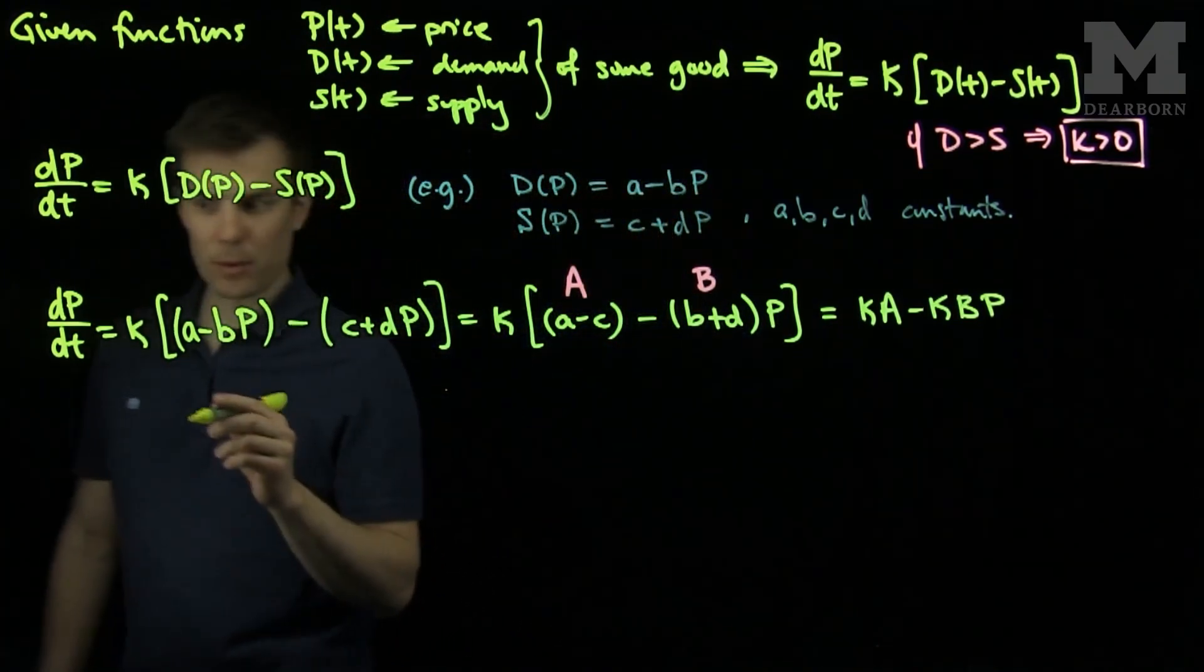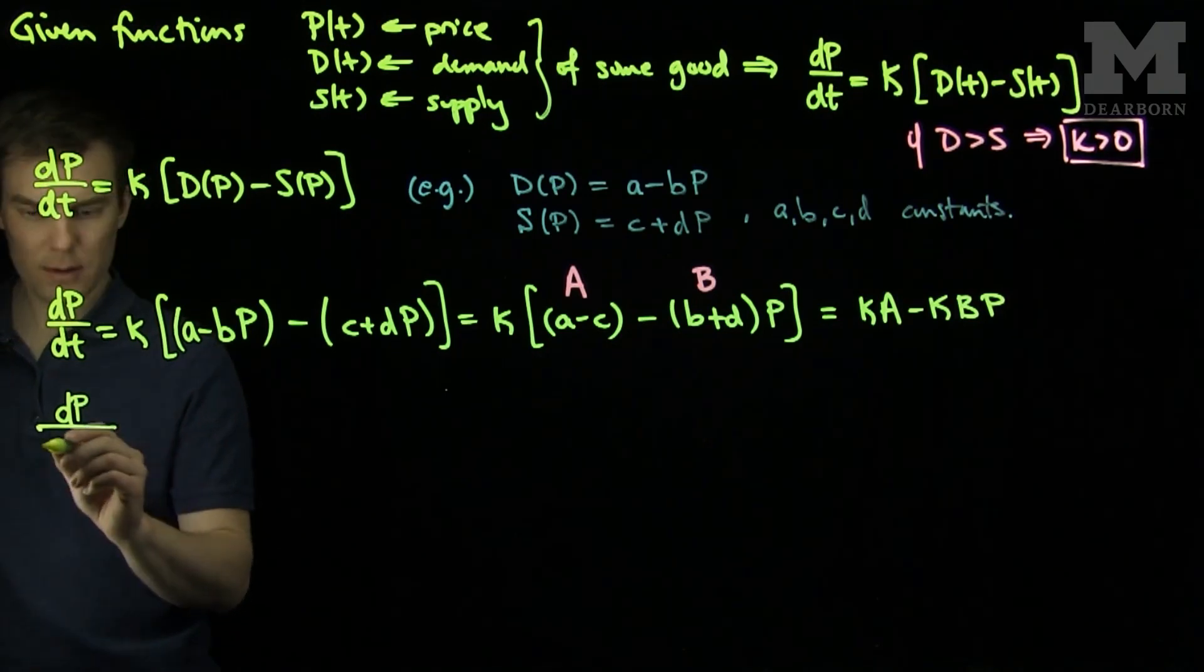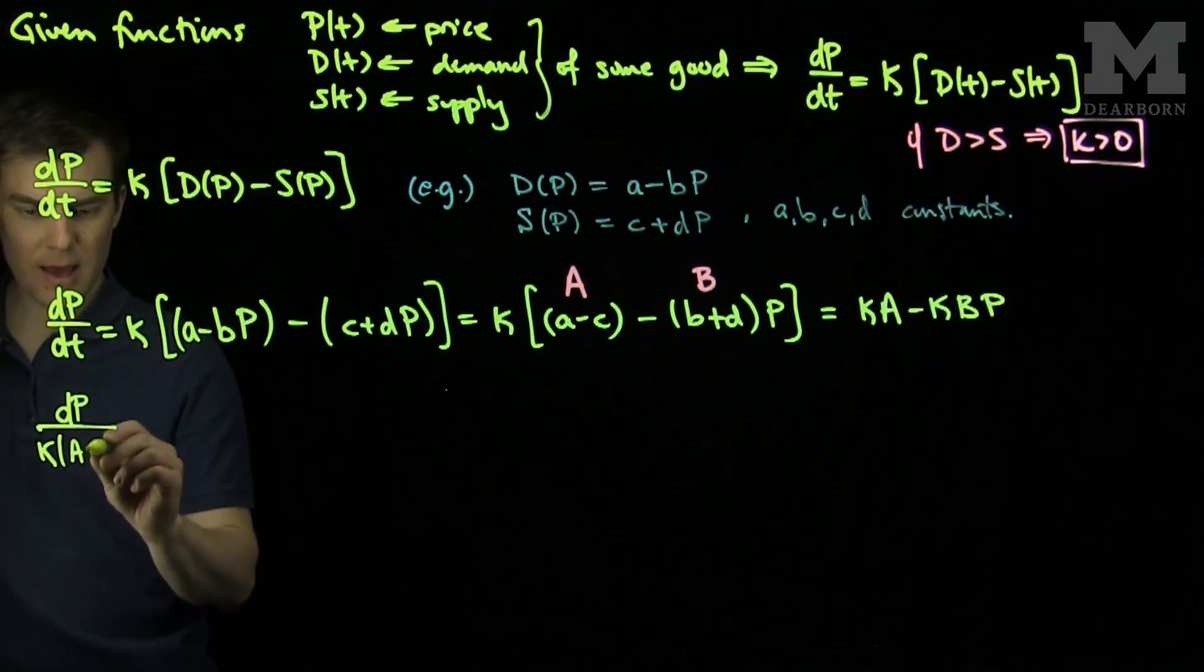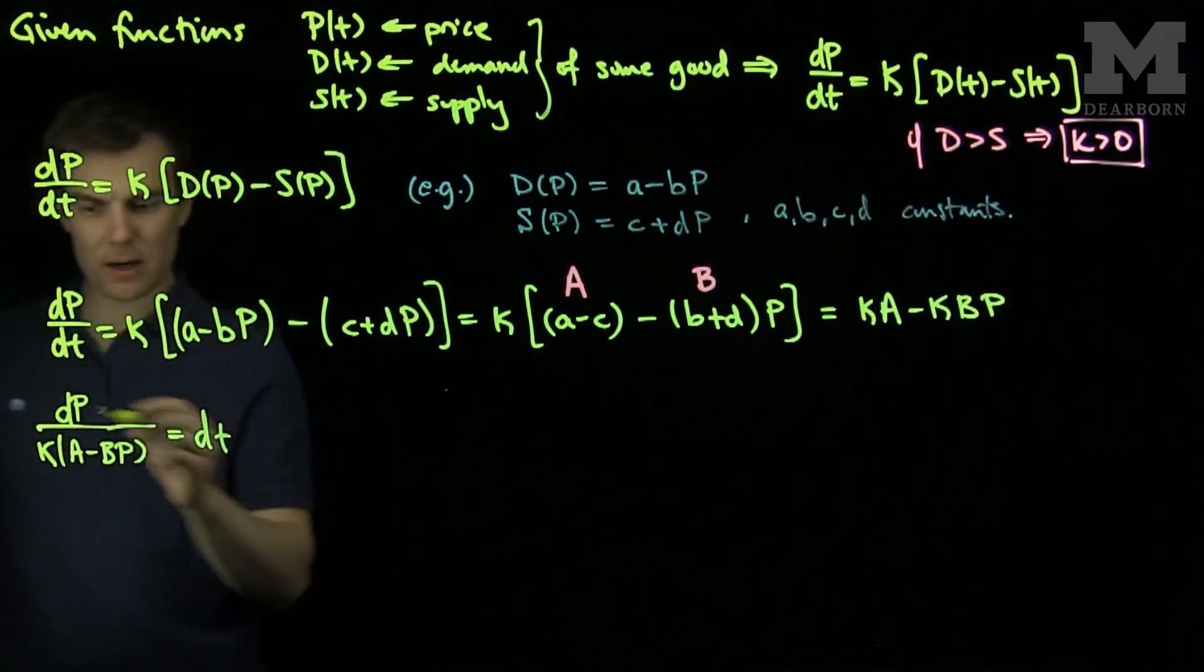Now, we notice that this is a separable equation, so we'll have that dP over K(A minus Bp) is equal to dt. And now we can integrate both sides.